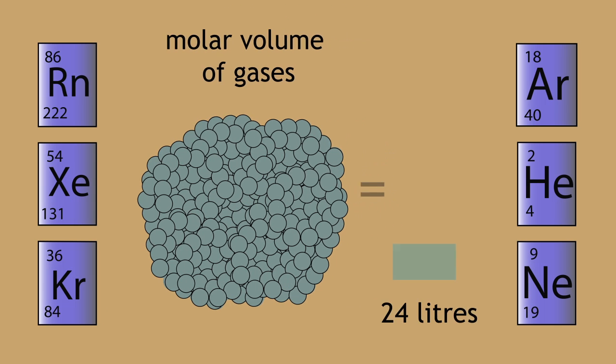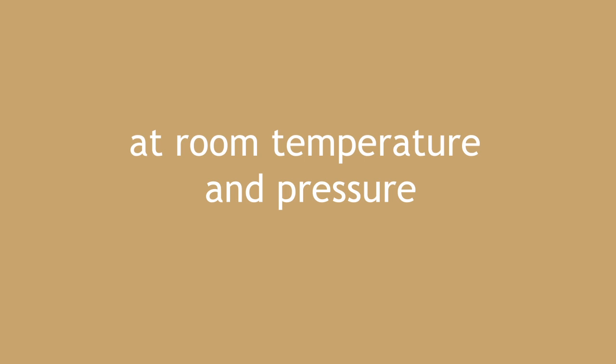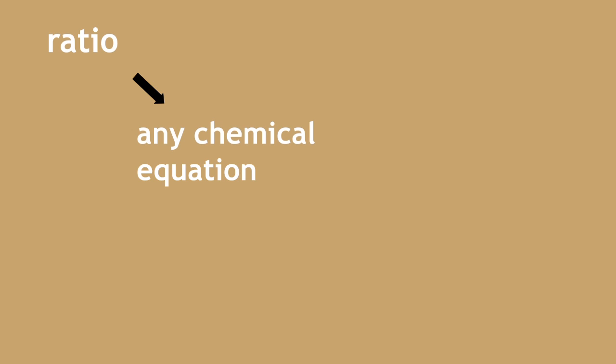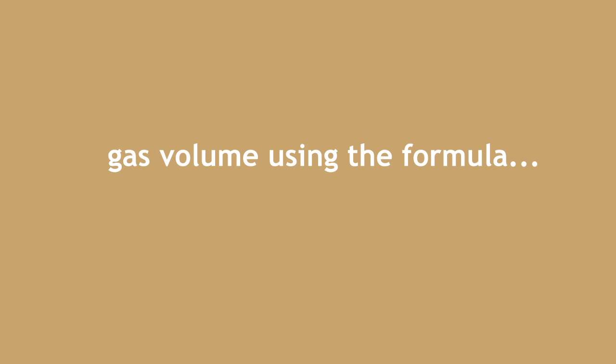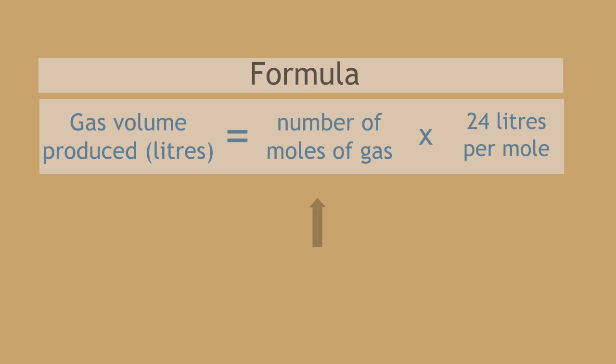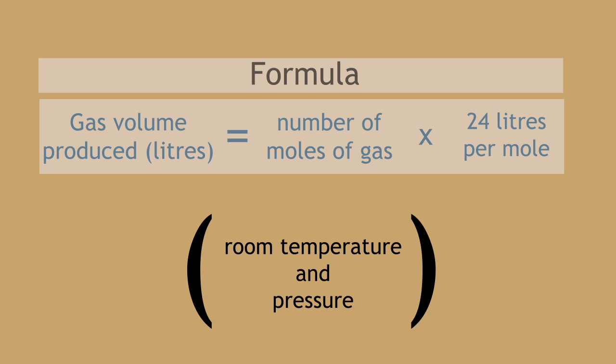In summary, the molar volume of any gas is always 24 litres per mole at room temperature and pressure. Using the example provided, you can use the ratio from any chemical equation to tell you the number of moles of gas produced from the reactants. This means you can always calculate the gas volume using the formula number of moles of gas times 24 litres per mole at room temperature and pressure.